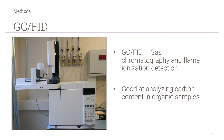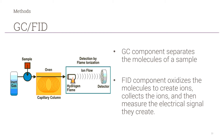The last piece of equipment I used was GC-FID, or gas chromatography with flame ionization detection, which is good at analyzing carbon content in organic samples. The GC component separates the molecules of a sample, while the FID component oxidizes the molecules creating ions. It then collects the ions and measures the electrical signal they create.